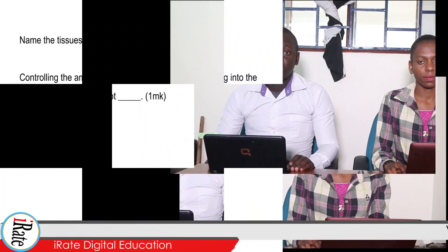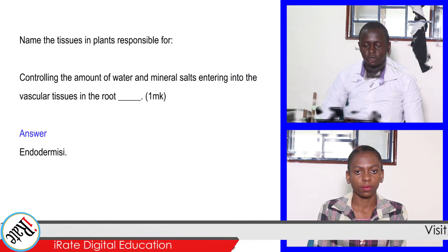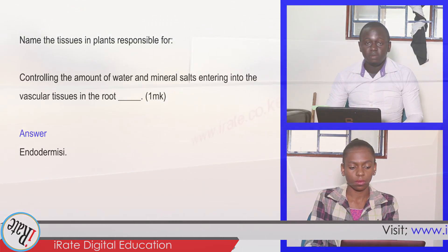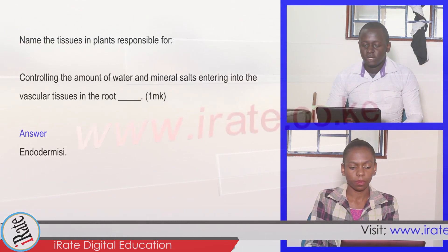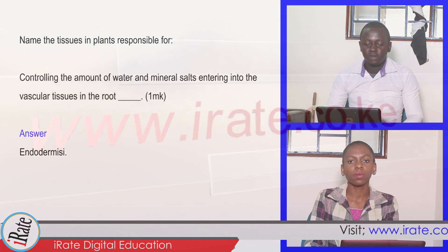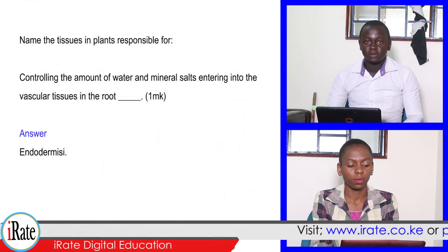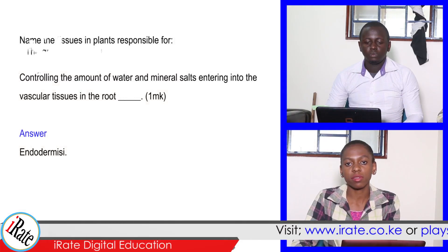Name the tissues in plants responsible for controlling the amount of water and mineral salts entering into the vascular tissues in the root. Endodermis.